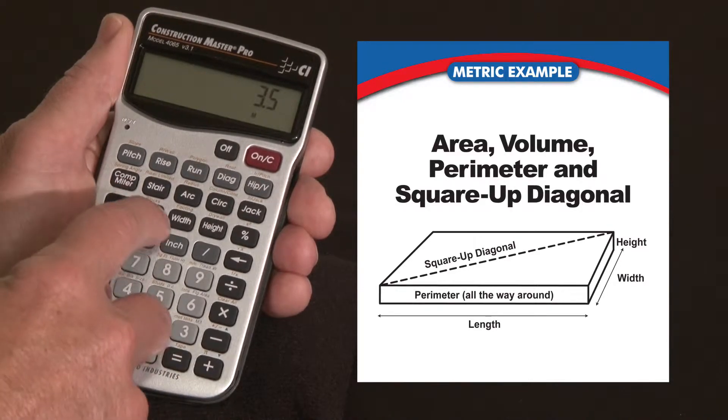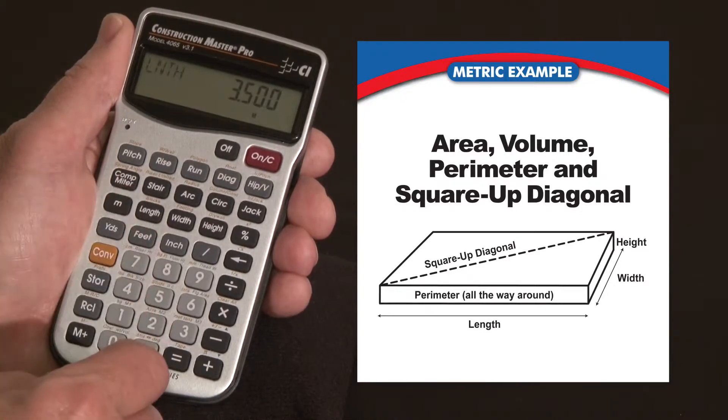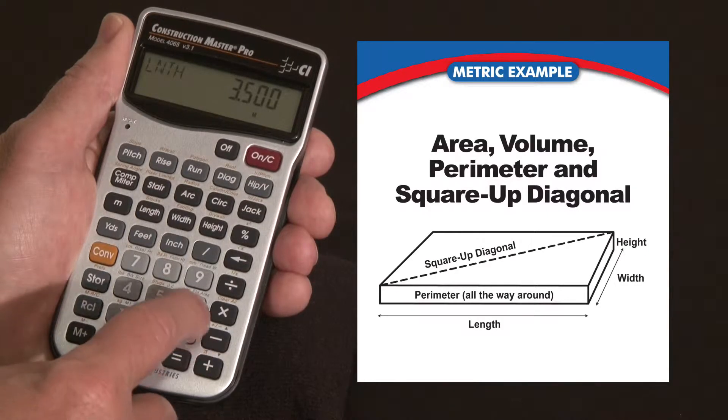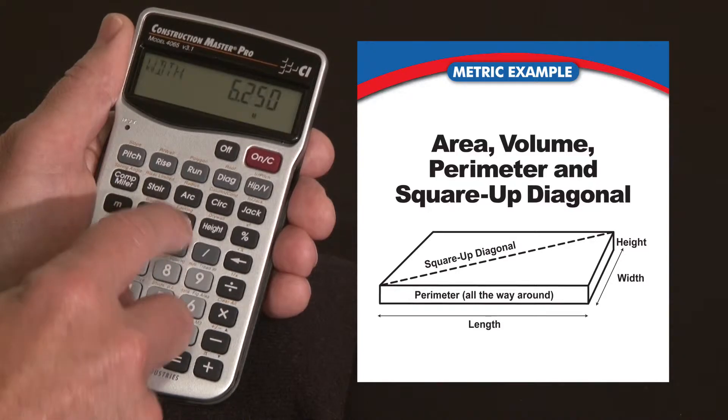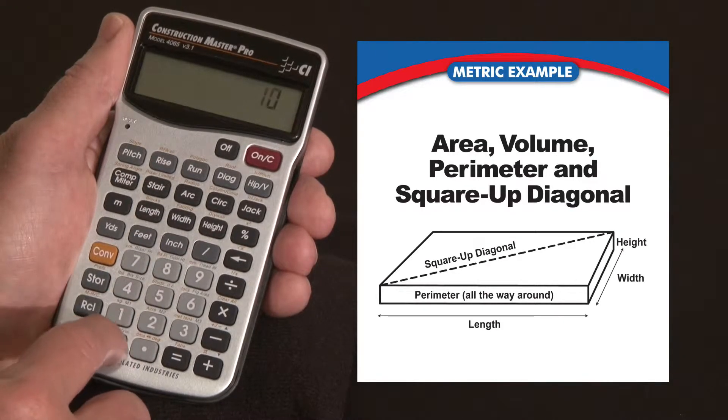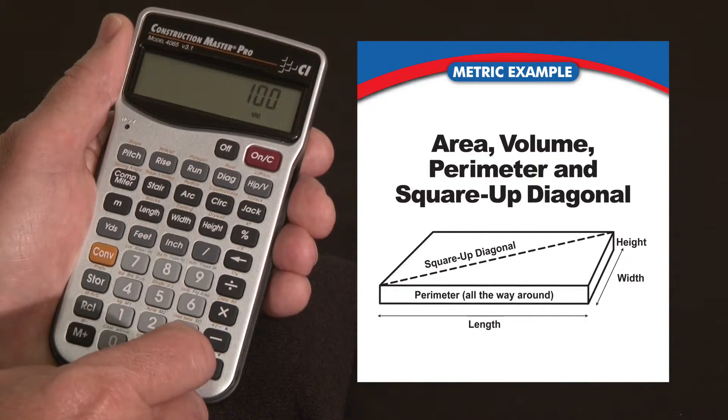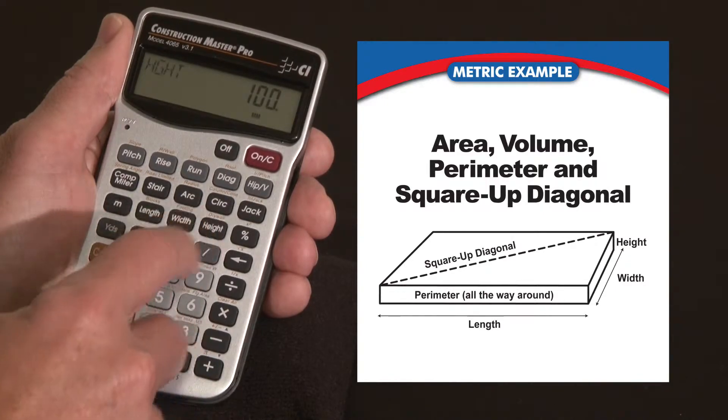Let's say 3.5 meters is the length of a pad we're going to do, and maybe it's 6.25 meters wide. 6.25 meters is the width and we're going to pour it 100 millimeters deep. So let's go 100, convert 9, gives us millimeters. I'm going to call that the height or depth.